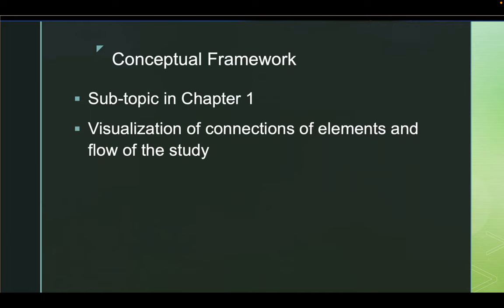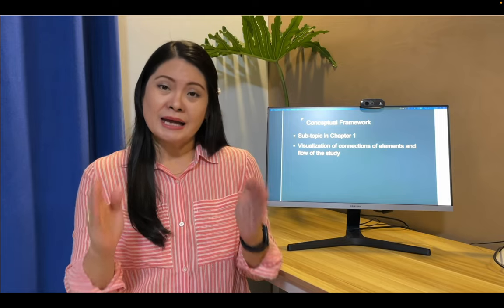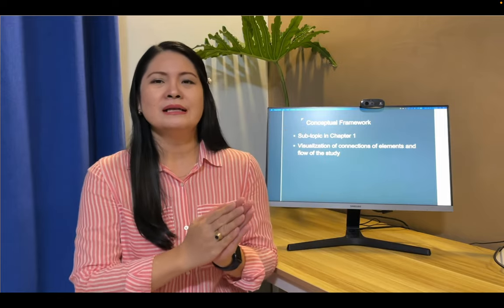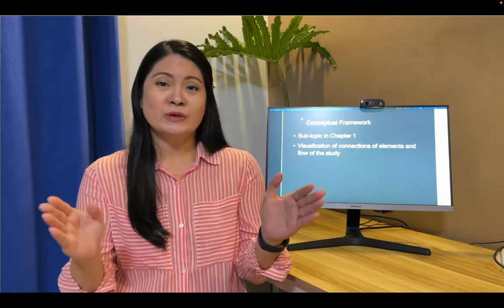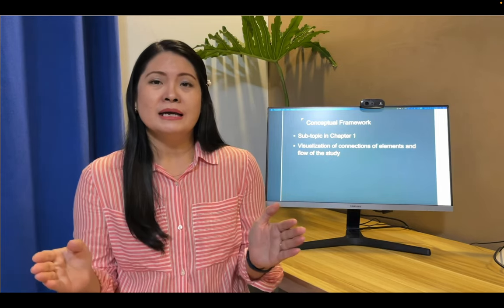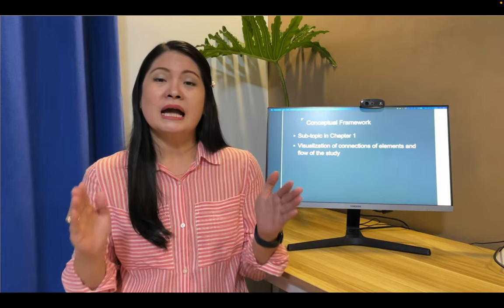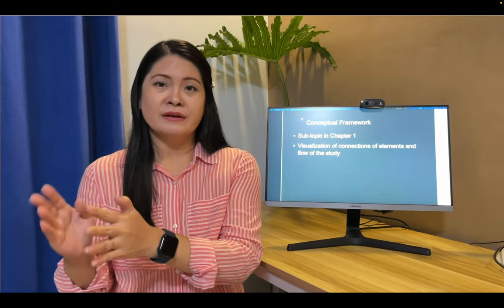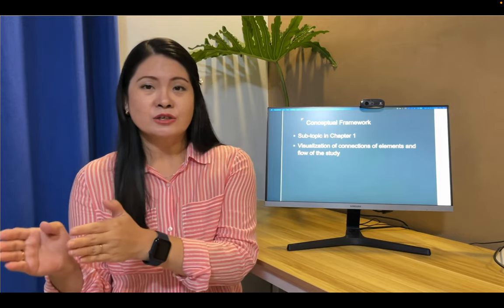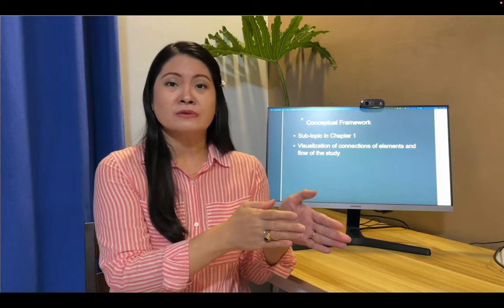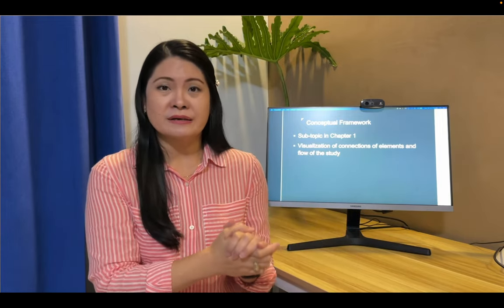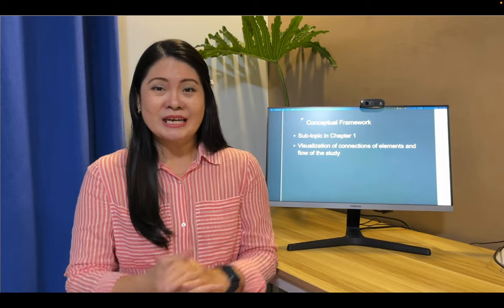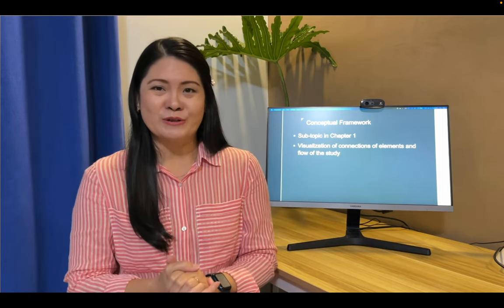What are the elements that have connections? In research, as taught by our teachers, there is the dependent variable and the independent variable — these usually have connections. For example, if you study the effect of hours of review on children's grades, the dependent variable is the reaction when you change the amount of review time. IV and DV usually have relationships, and you should be able to show that in your conceptual framework.